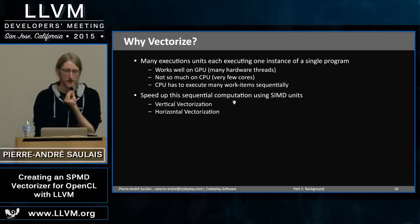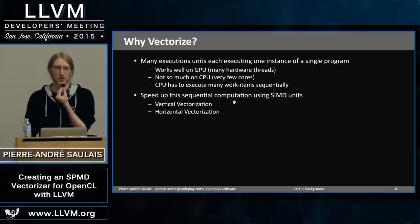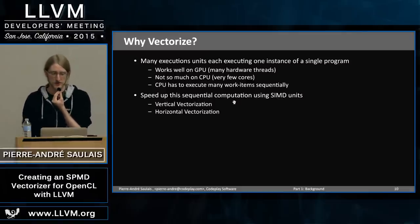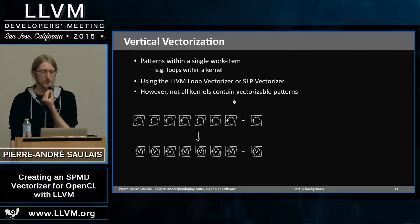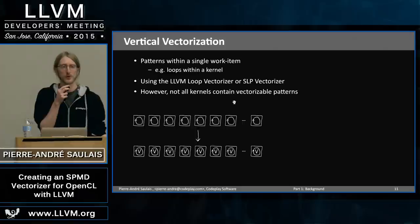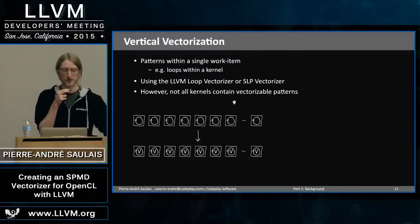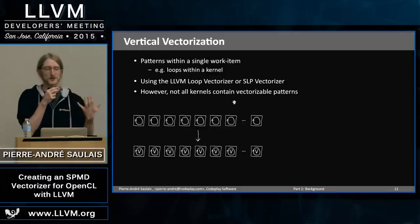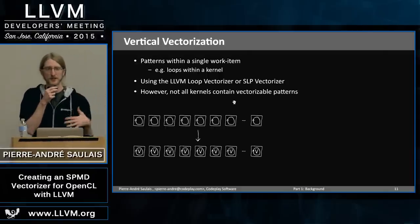Why do we want to vectorize? On GPU, this works well because there are many SIMD units providing good parallelism. But on CPU, you have to manually emit vector instructions. There are two approaches: vertical and horizontal vectorization. With vertical vectorization, you look at your kernel for patterns — for example, a loop — and use the LLVM loop vectorizer to vectorize it. This makes each work item run faster, but it depends on those patterns being present. If your kernel lacks them, your SIMD units remain underutilized.